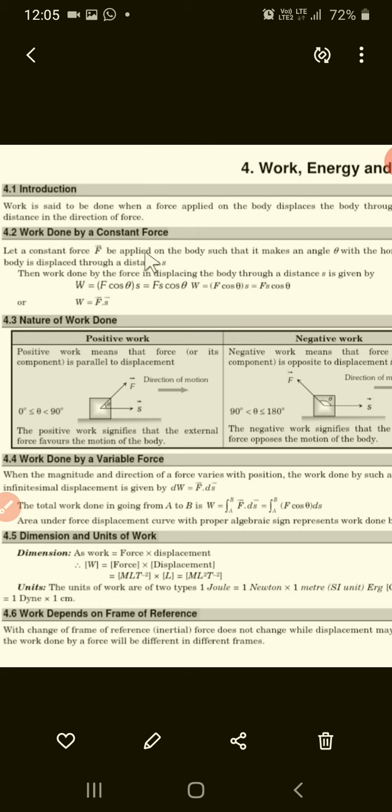There are three types of work: positive work, negative work, and zero work. Here, W = F·S·cos(θ), F·S·cos(θ). It is the main formula. F means force, S means displacement, and theta is the angle between the force and displacement.